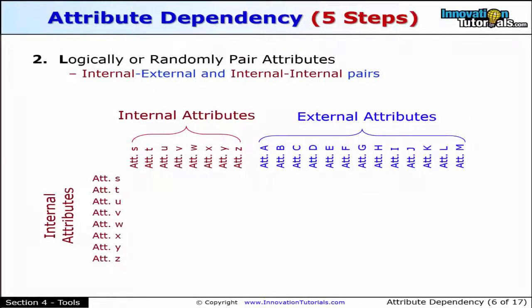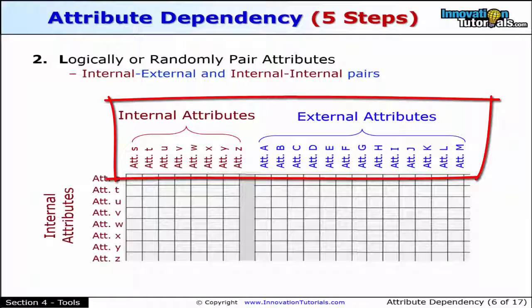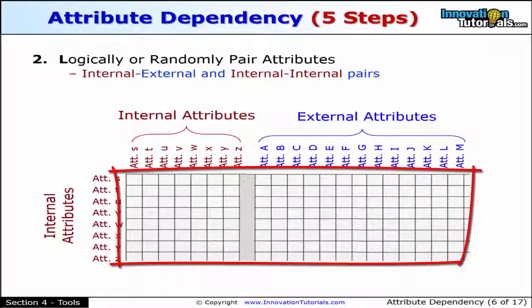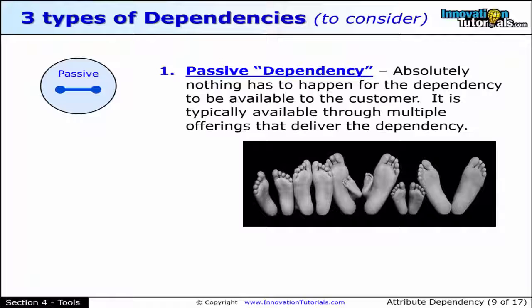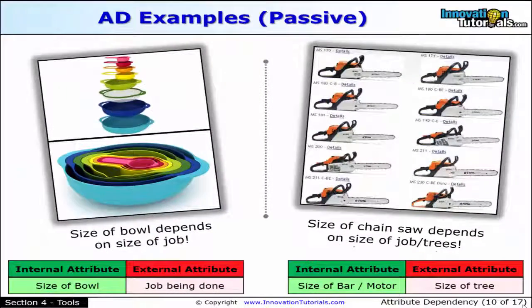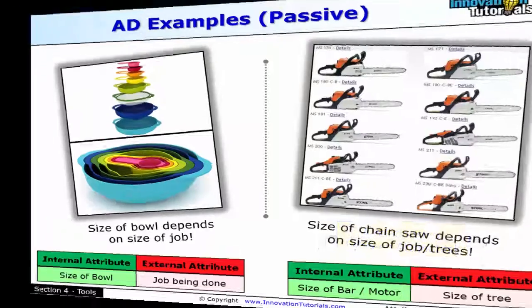Across the left side of the matrix would be all the internal attributes, and across the top of the matrix would be first internal and then external attributes. Each intersection represents a possible hypothetical concept. For example, shoe sizes change — they change by just having multiple sizes. You don't have to do anything when you go in a store to find many different shoe sizes of the model that you want. That's a passive dependency. The internal attribute here was the size of the bar motor, the external attribute was the size of the tree, and you had many different options — that's a passive attribute.